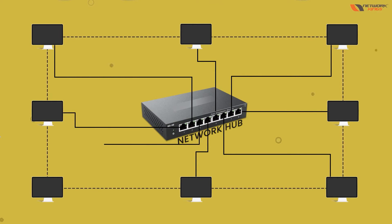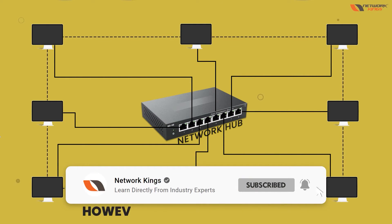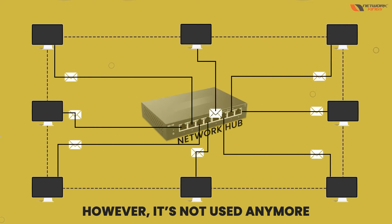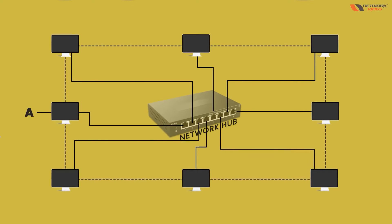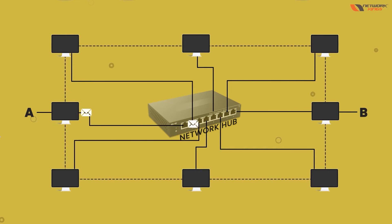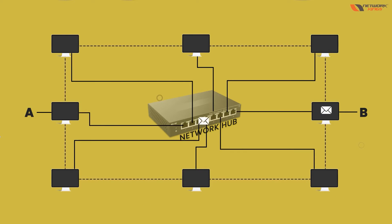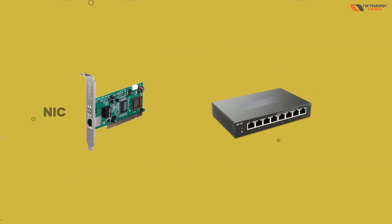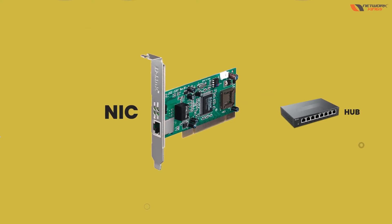This is how we connect computers — like eight computers together with a hub. It is not used anymore because if you send data, it goes to all computers together. This is what we call broadcast — sending data to everyone. It's a problem because bandwidth utilization goes very high. So those two devices we covered are NIC and hub.